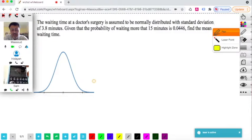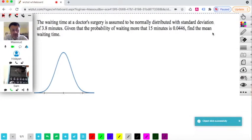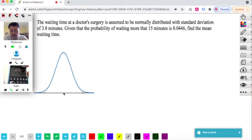So this is, obviously that's the mean value that we don't know. So the mean value here, we don't know the mean value, but we know that the standard deviation is 3.8.